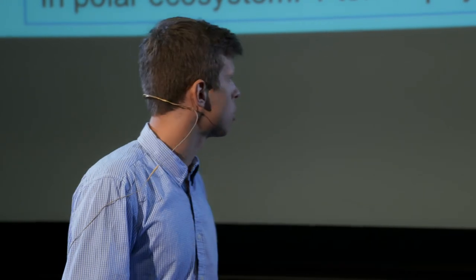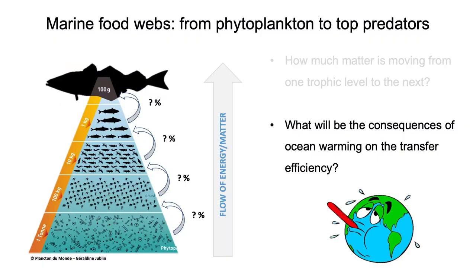So, polar ecosystems are much more efficient than tropical ecosystems. But this latitudinal difference in transfer efficiency suggests that the transfer efficiency is very sensitive to temperature. So, we want to answer the question, what will be the consequences of the ocean warming on the transfer efficiency?